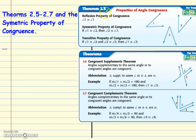Get that highlighter out again. We have properties: the Reflexive Property, Symmetric Property, and Transitive Property — these are properties of congruence. We've done them for equality; it's the same thing. I'm not going to spend a lot of time on them.